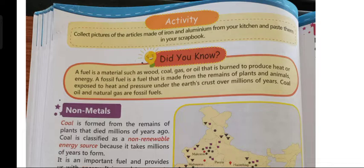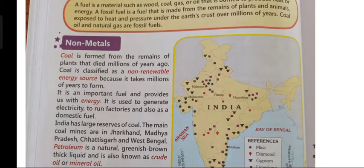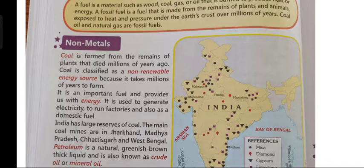Now let us begin with today's topic which is non-metals. Coal is formed from the remains of plants that died millions of years ago. Coal is classified as a non-renewable energy source because it takes millions of years to form. It is an important fuel and provides us with energy. It is used to generate electricity, to run factories and also as a domestic fuel. India has large reserves of coal. The main coal mines are in Jharkhand, Madhya Pradesh, Chhattisgarh and West Bengal.